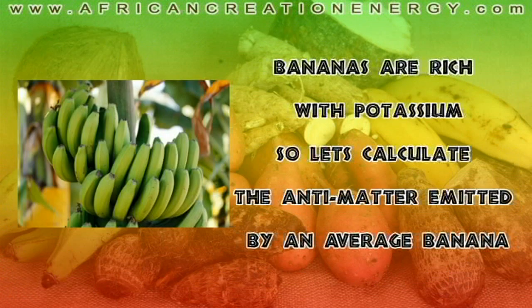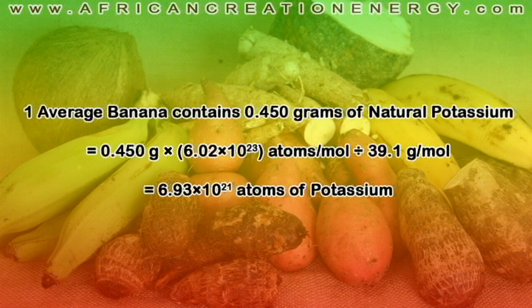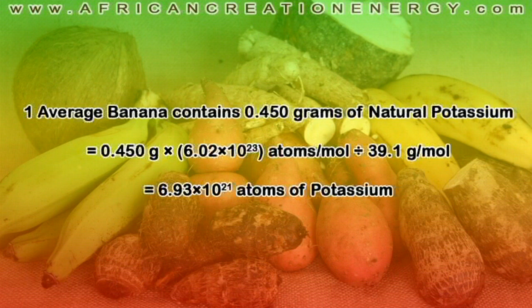Bananas are rich with potassium, so let's calculate the antimatter emitted by an average banana. One average banana contains about 450 milligrams of natural potassium. We can calculate how many individual atoms are in 450 milligrams of natural potassium by multiplying 450 milligrams by Avogadro's number, which gives you the number of atoms per mole, then dividing by the number of grams per mole. You get 6.93 times 10 to the 21 individual atoms in 450 milligrams of potassium in your average banana.